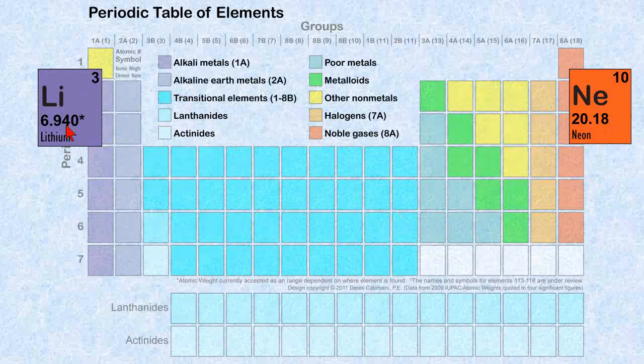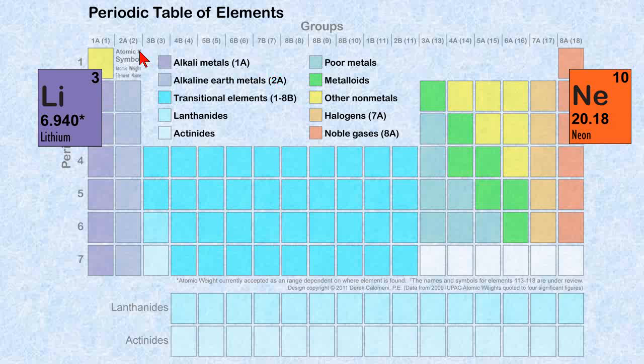And there's the lithium and neon easily placed. If you look at lithium, you count one, two, three. It's the third element. And you count all the way up to 10, and you arrive at neon, which is the 10th element, 10 protons.